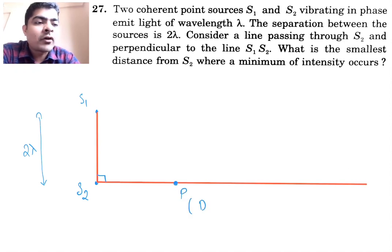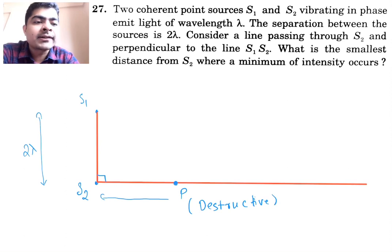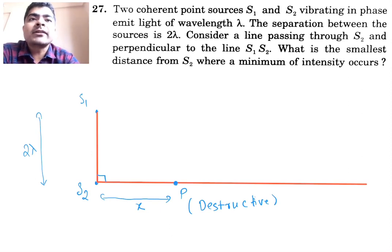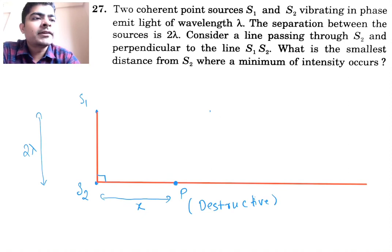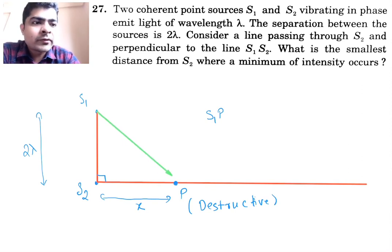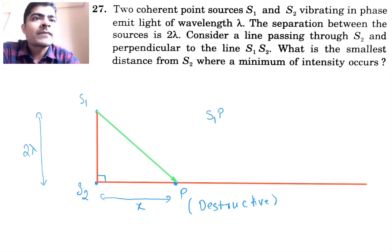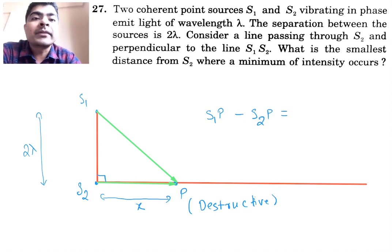Minimum of intensity means destructive interference. Let's say we have point p — we want destructive interference at p, such that if you take this distance to be x, we have to find the minimum value of x. For destructive interference, the path difference s1p minus s2p should be an odd multiple of lambda by 2, that is (2n+1)·λ/2.